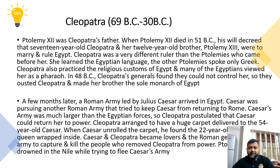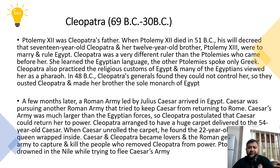In 48 BC, Cleopatra's generals found that they could not control her. So they ousted Cleopatra and made her brother the sole monarch of Egypt. A few months later, a Roman army led by Julius Caesar arrived in Egypt. Caesar was pursuing another Roman army that tried to keep him from returning to Rome. Caesar's army was much larger than the Egyptian forces, and so Cleopatra postulated that Caesar could restore her to power.